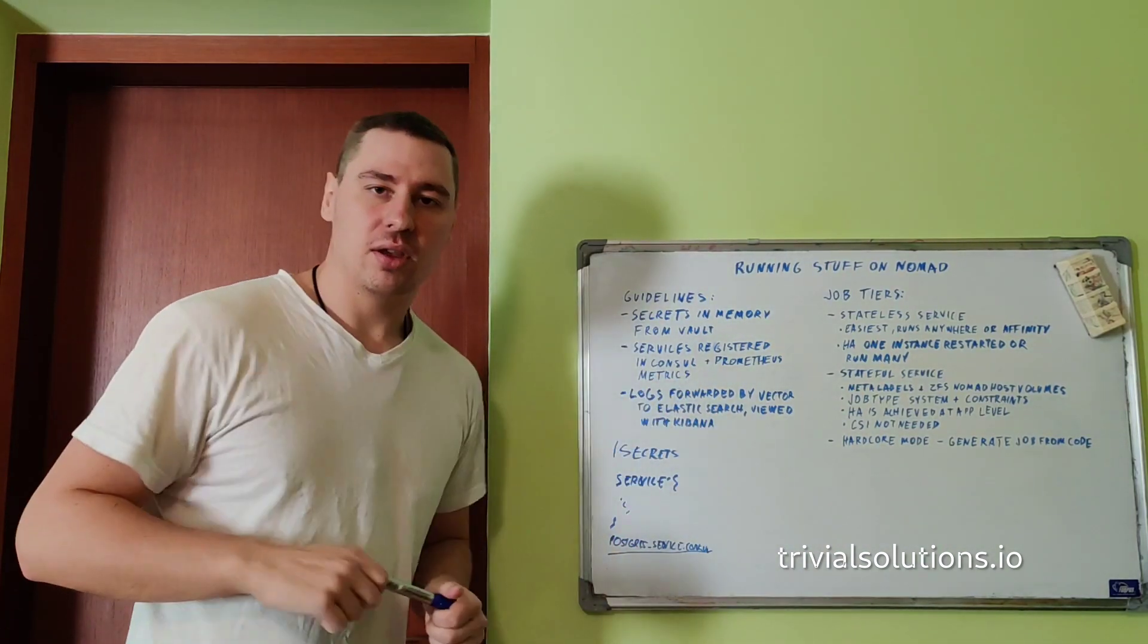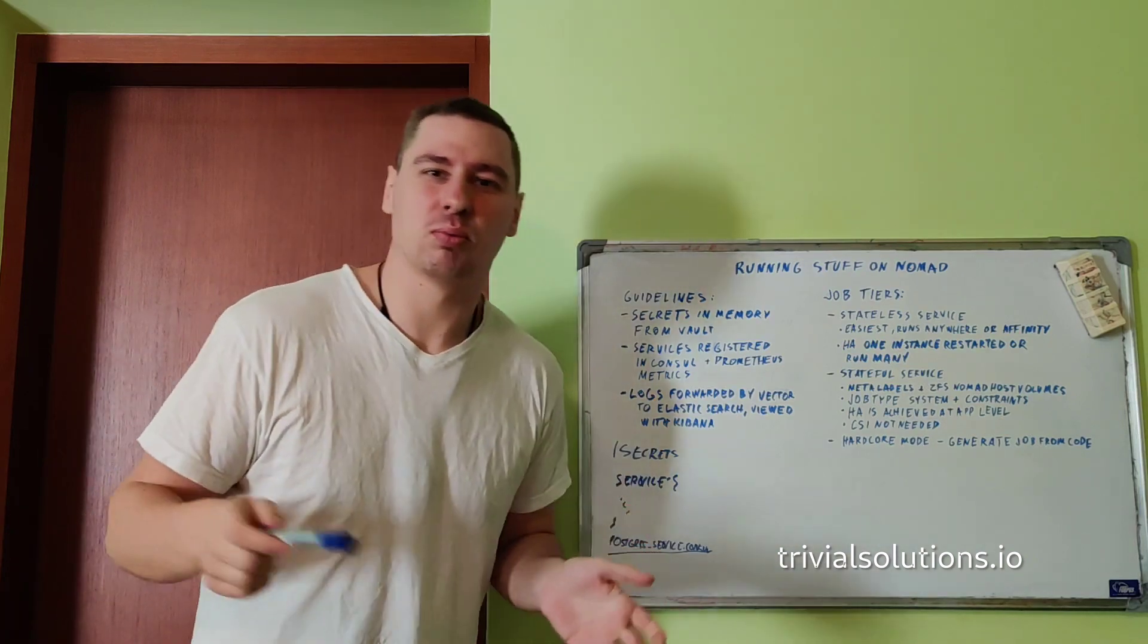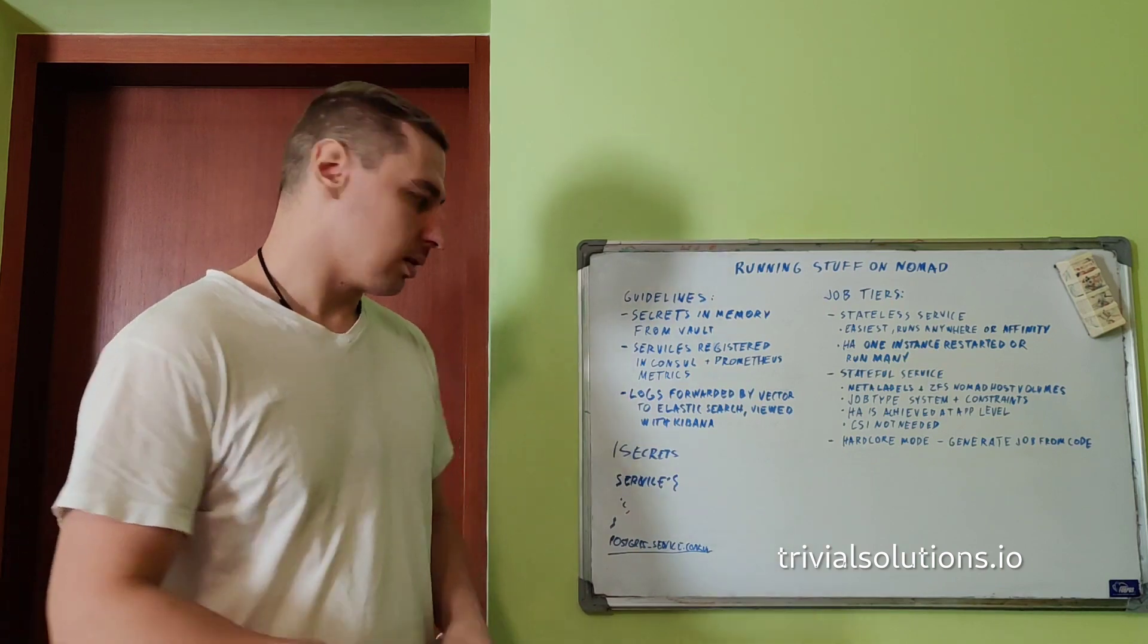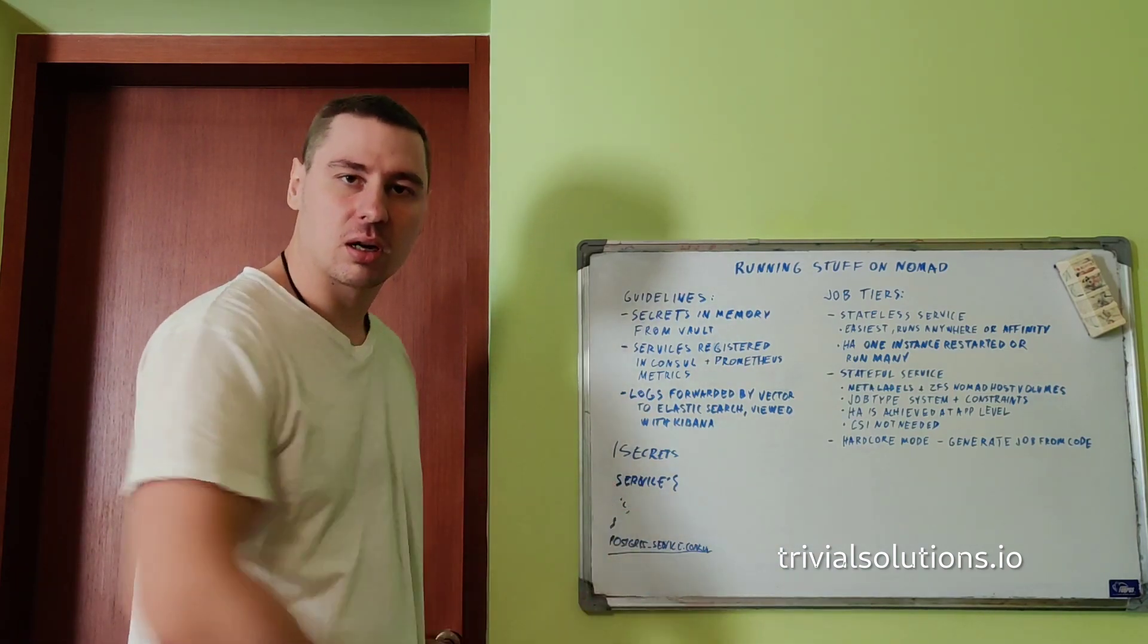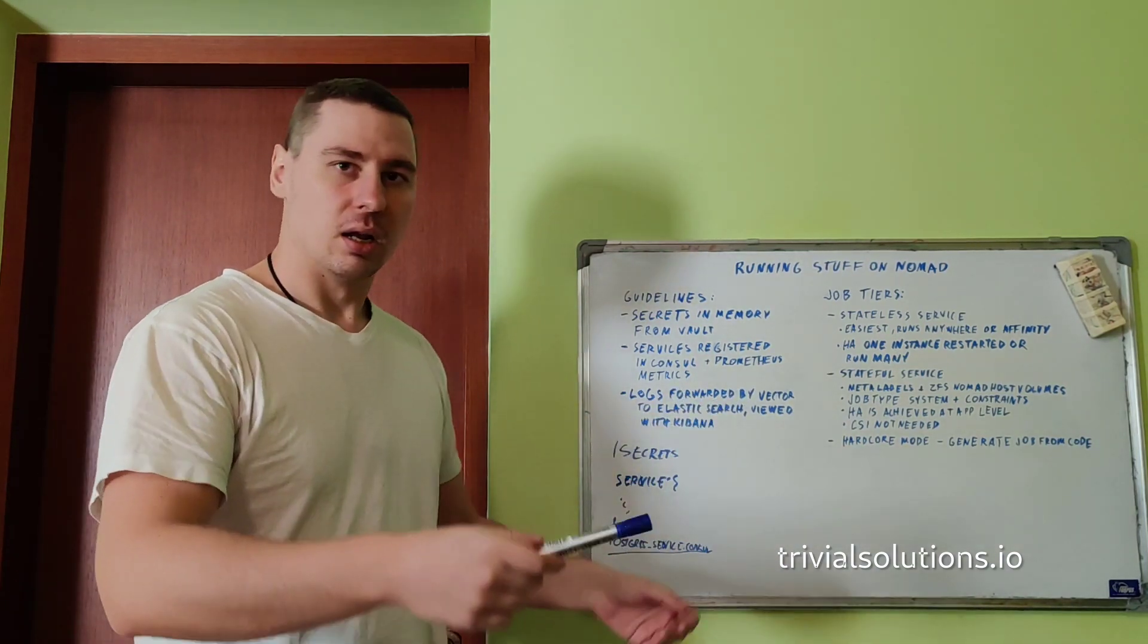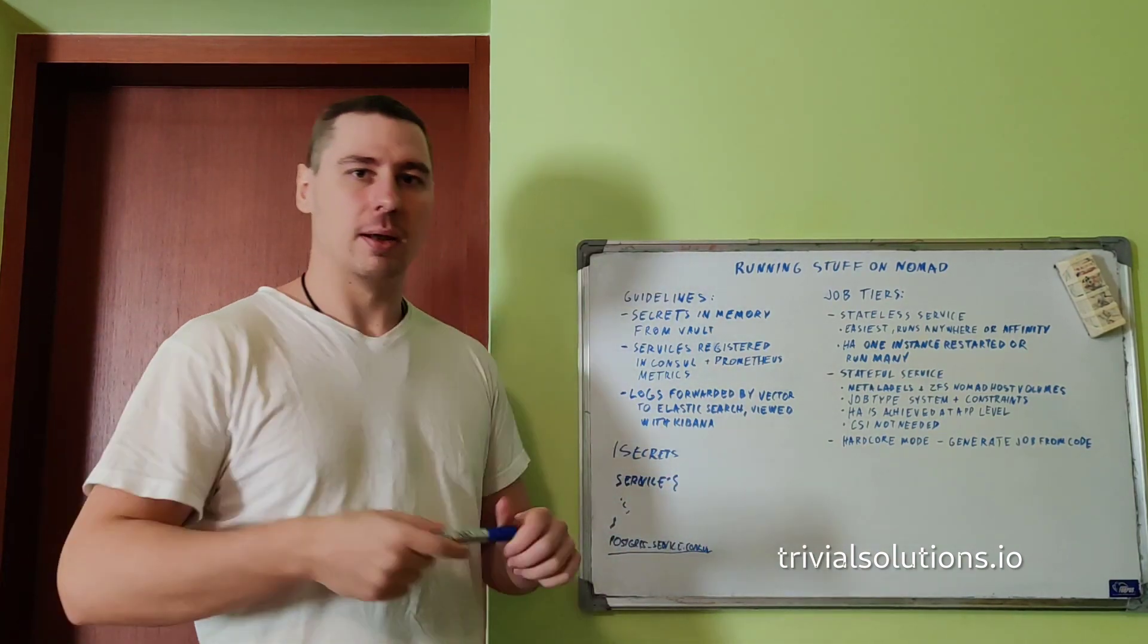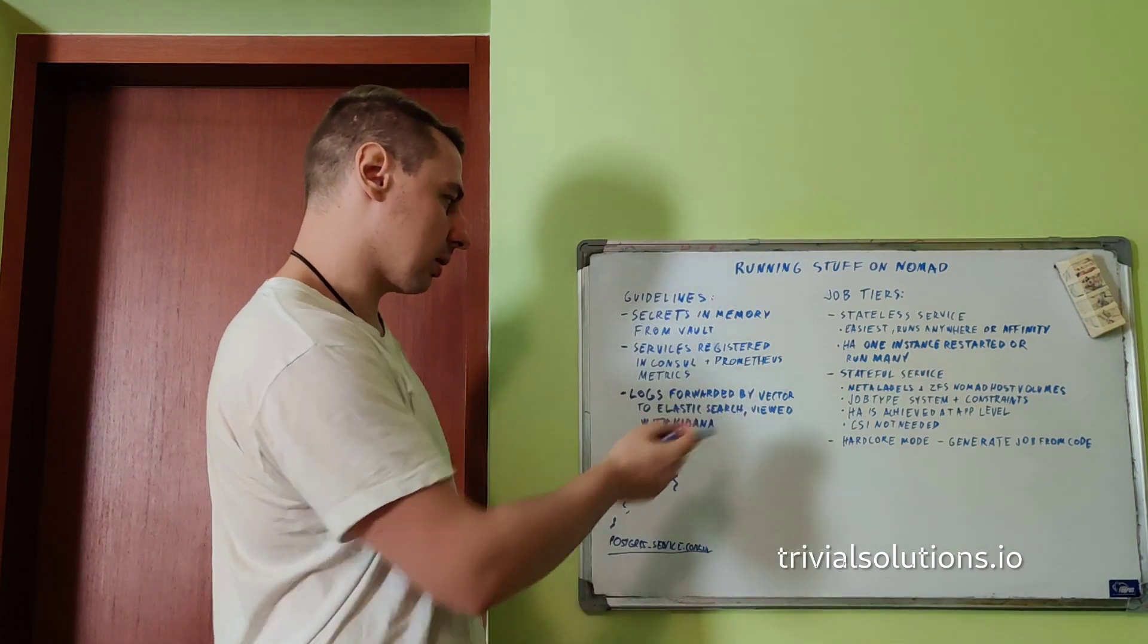Prometheus metrics: I saw some people that for some reason want to modify by themselves Prometheus targets, modify that YAML file, add all the services. I don't understand why they do that. You could just tell Prometheus to scrape Consul configs with certain tags, say Prometheus. Then you can register Consul services with that tag and Prometheus will pick those up.